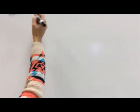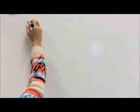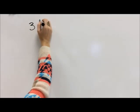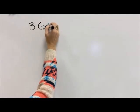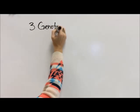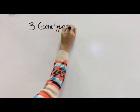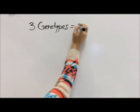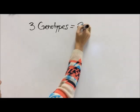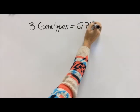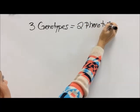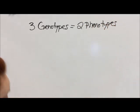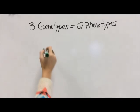So, let's look at some new vocab. On top of genotype and phenotype, we have three genotypes, and these three genotypes give us — for dominant and recessive genes that have that nice pretty picture — two phenotypes.